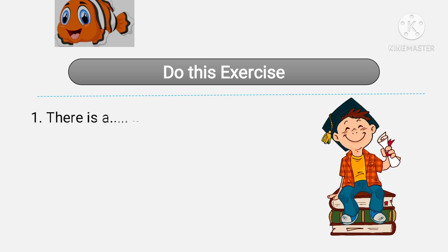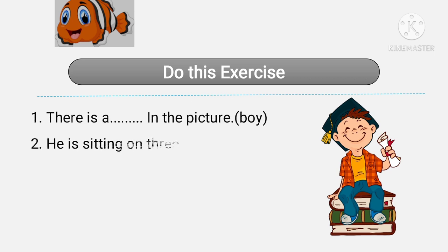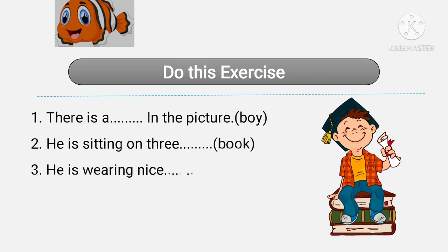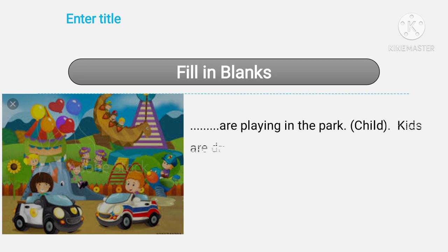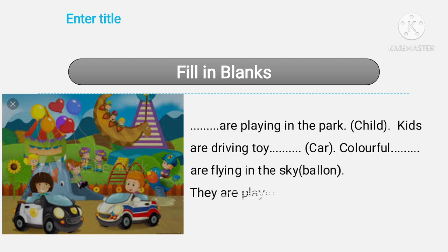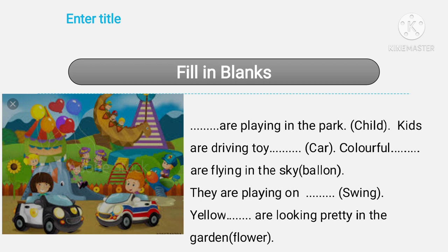There is a blank in the picture. Fill in the blanks using the plural words from the given words in brackets. Second: he is sitting on three blank. He is wearing nice blank. Kids are playing in the park — blank. Kids are driving blank. Colorful blank are flying in the sky. They are playing on blank. Yellow blank are looking pretty in the garden. Fill the blanks with the help of the words given in the brackets.